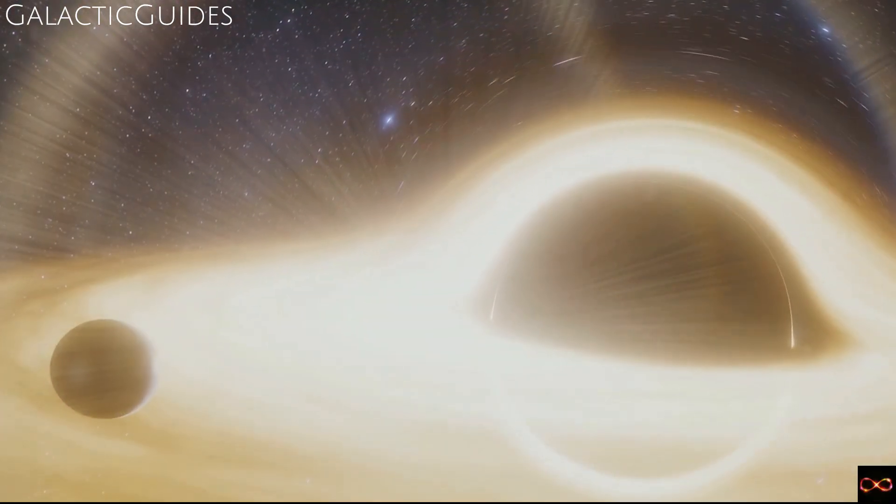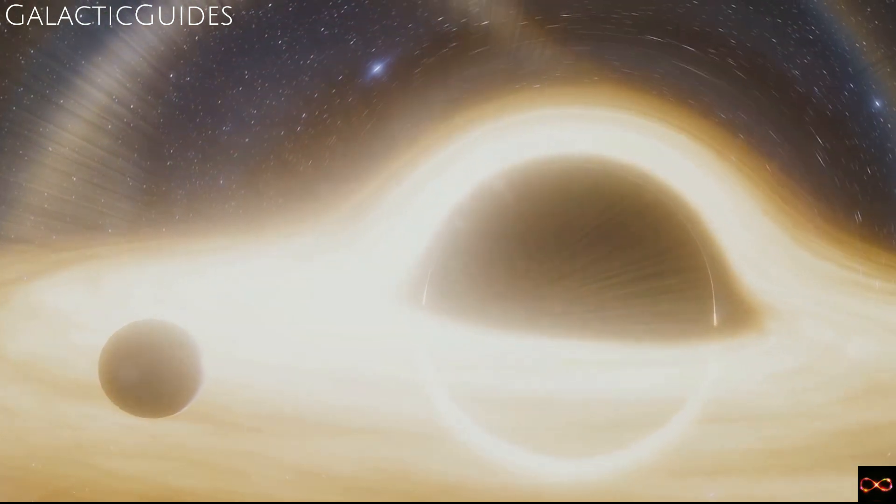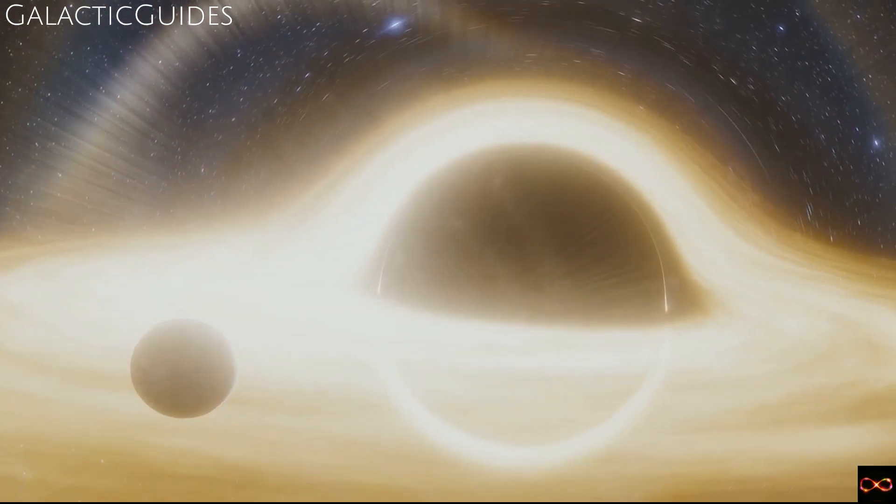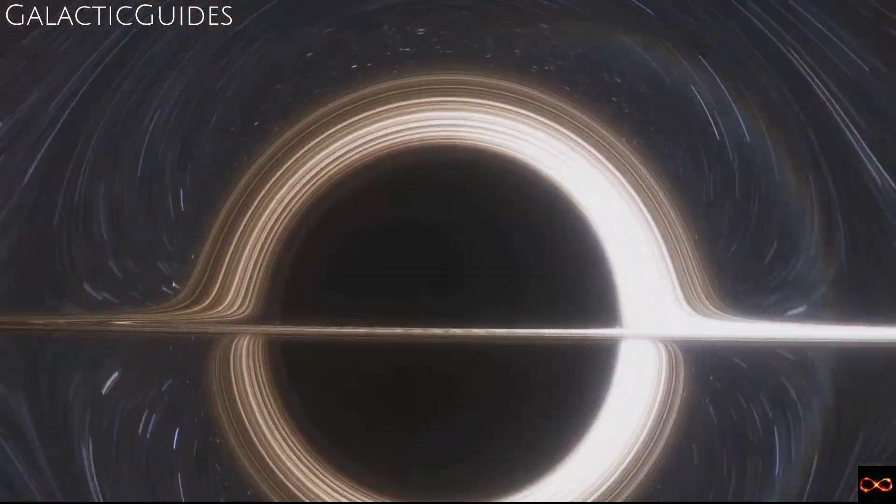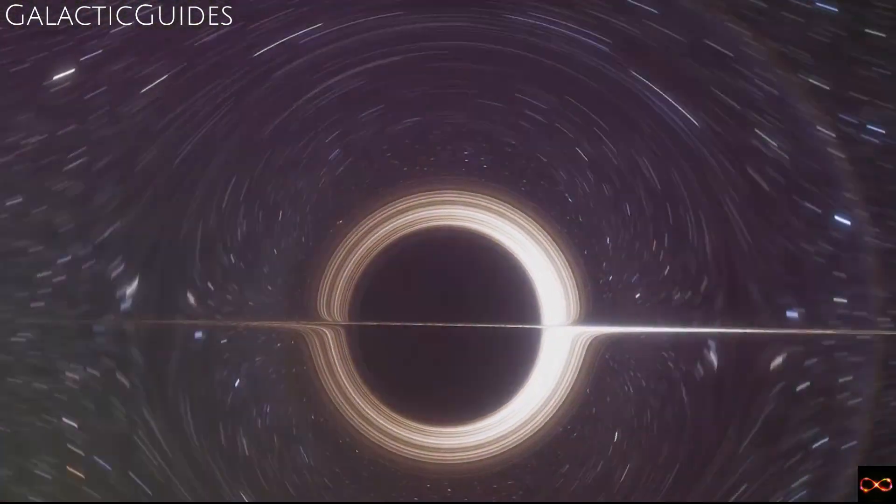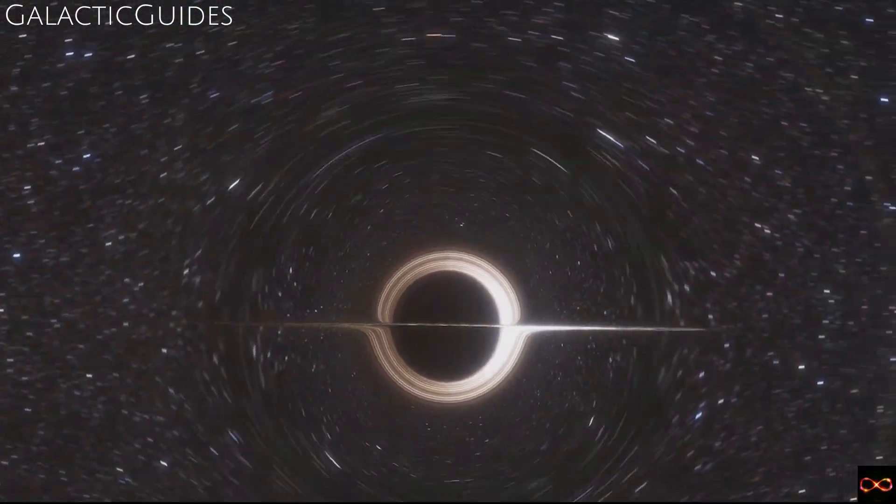But what happens to the core? If the star is massive enough, the core continues to collapse, becoming denser and denser. It becomes so dense, in fact, that it warps and bends the very fabric of space and time around it, creating a black hole.